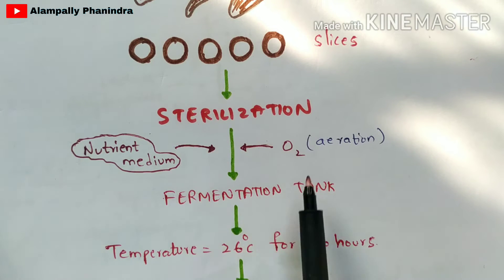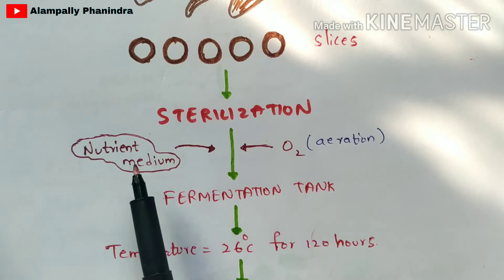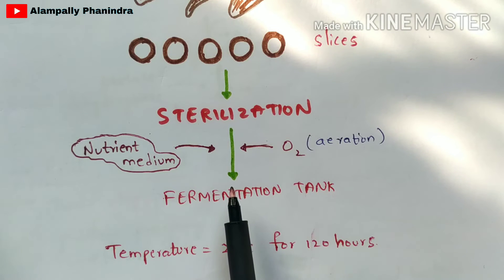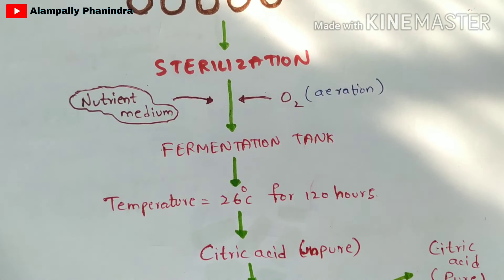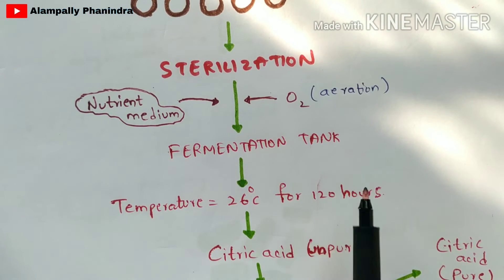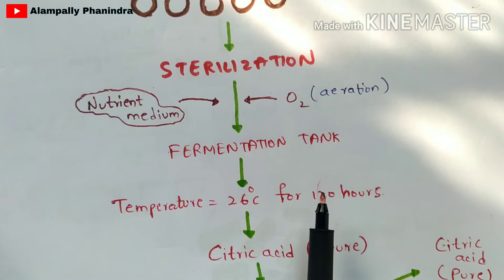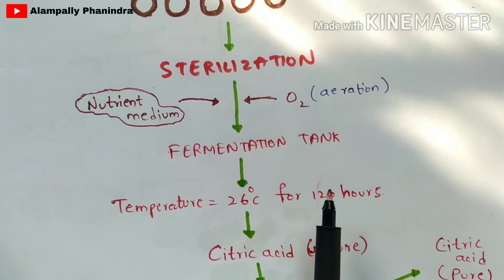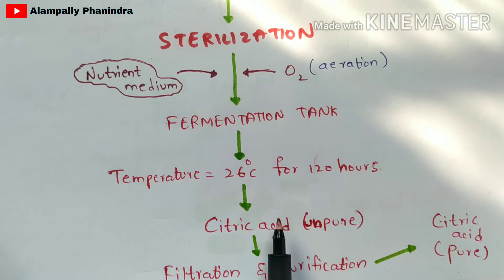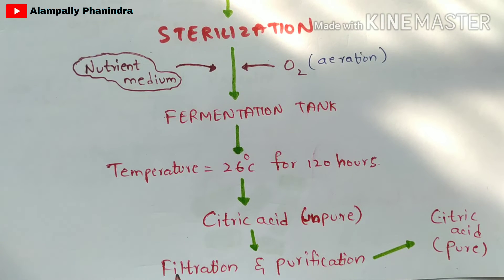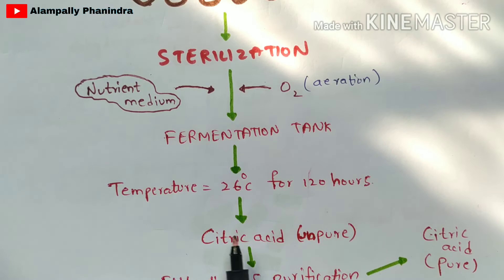The fermentation tank contains the cassava slices along with the nutrient medium, and oxygen is supplied. The fermentation is carried out at 26 degrees Celsius for only 120 hours. Compared to the first method using Aspergillus niger, which requires 5 to 14 days, this cassava method requires much less time. The citric acid produced is initially in impure form, so filtration and purification are performed to produce pure citric acid. This is how citric acid can also be produced using cassava.